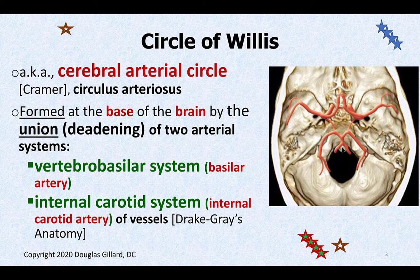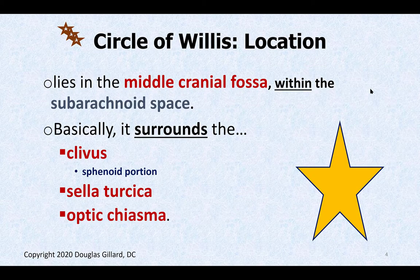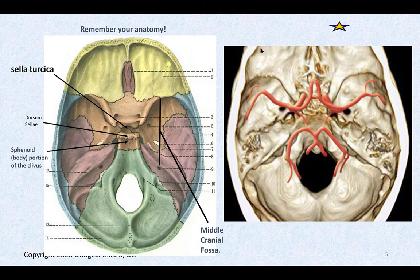We can see the vertebral arteries here form the basilar artery. The basilar artery dead ends into the circle of Willis. Here's the internal carotid artery, which we studied in gross one and gross two, and the very end of it is a member of the circle of Willis — it splits into a middle cerebral artery. The circle of Willis is in the middle cranial fossa, specifically in the subarachnoid space of the brain. Anatomically, it surrounds the clivus — specifically the sphenoid portion of the clivus — the sella turcica, and the optic chiasma.